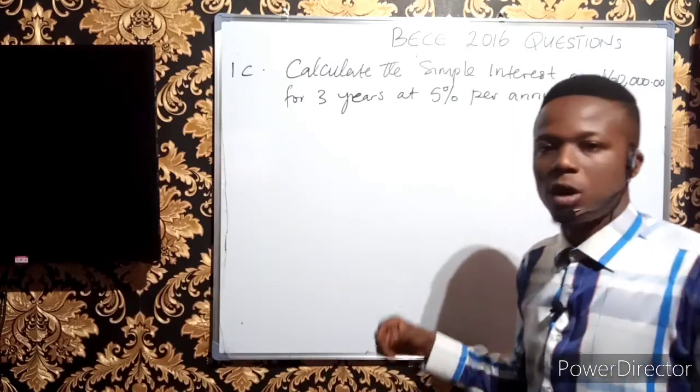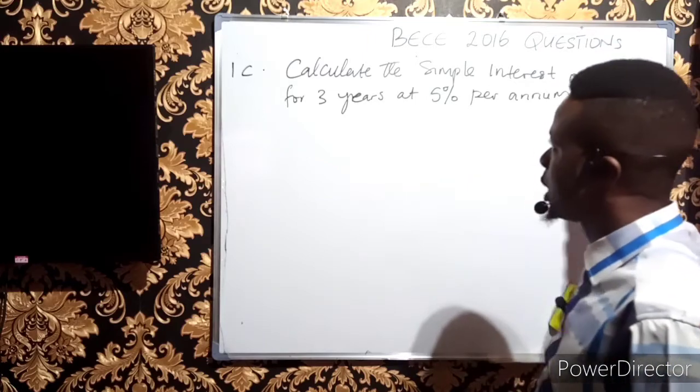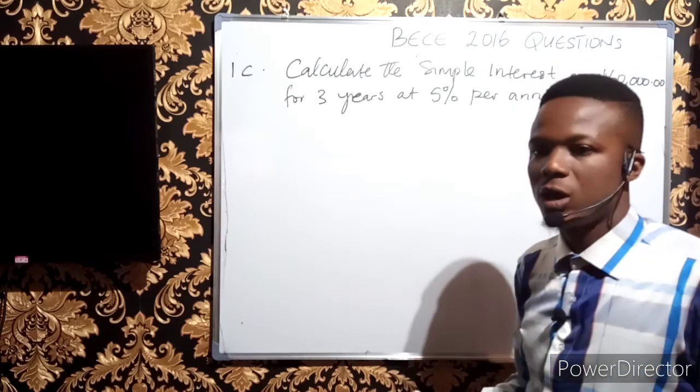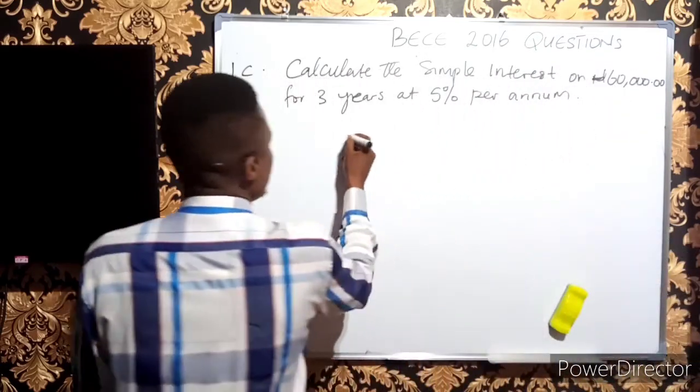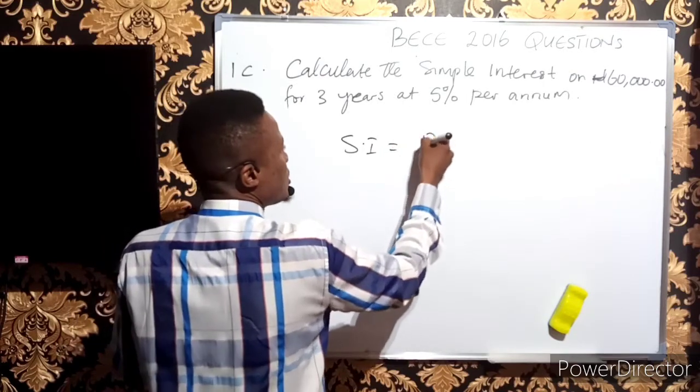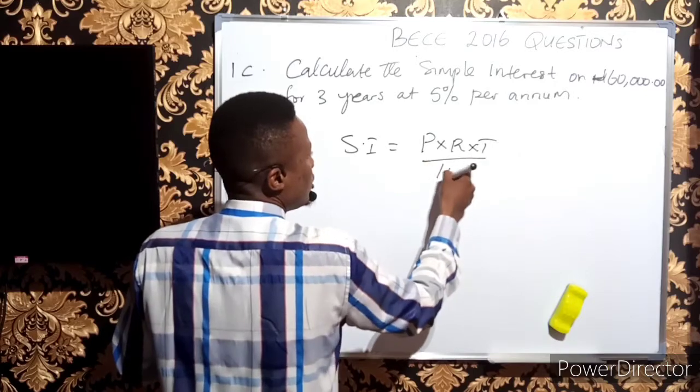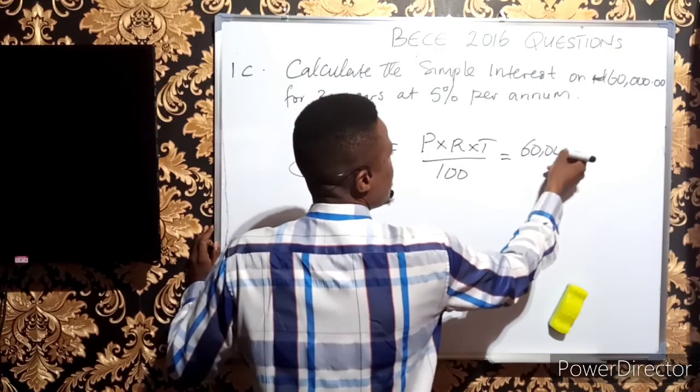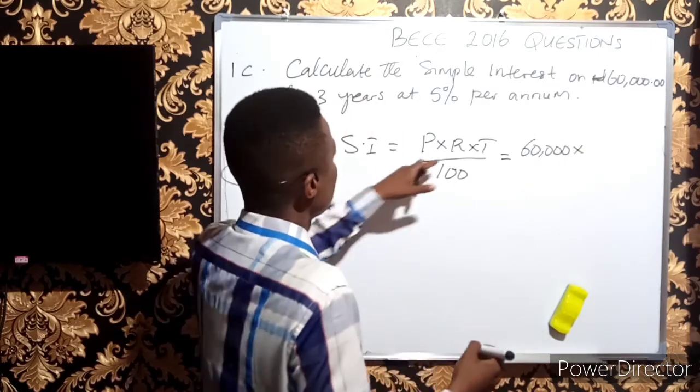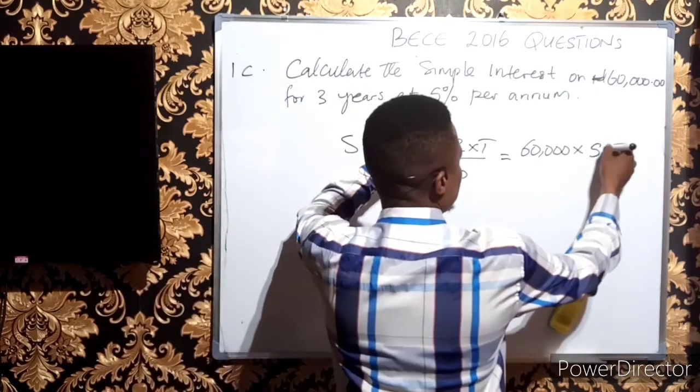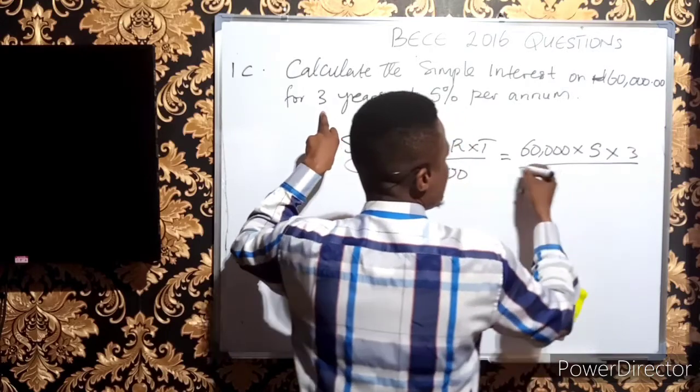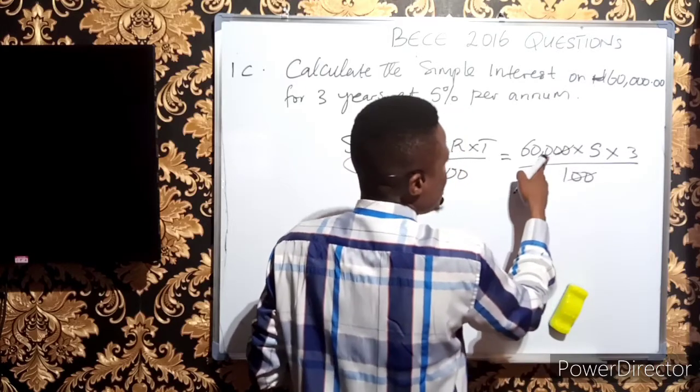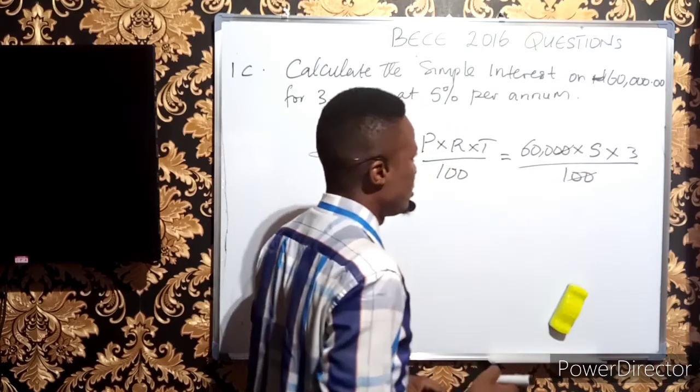In question 1c, we calculate the simple interest on 60,000 naira for 3 years at 5% per annum. The formula is SI = (Principal × Rate × Time)/100. Our principal is 60,000, the rate is 5%, and the time is 3 years.